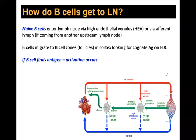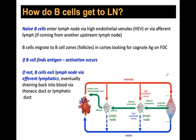Once the B cell reaches the cortex, it encounters follicular dendritic cells. If it finds its antigen on an FDC, that's the first step in B cell activation — it confirms antigen specificity and signals it to do other things. Most of the time, since only one in a million B cells is specific for any antigen, B cells won't see their antigen and exit via the medullary sinus to the efferent lymphatics, eventually re-entering the blood via the thoracic duct.